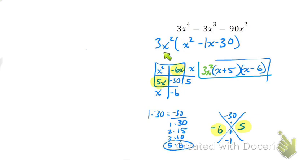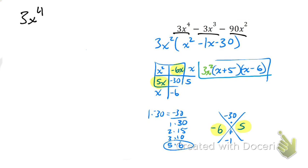So we have to take out the GCF first and then we're going to factor it. All the work is already here but I'm going to walk through it step by step. Ask me questions if you have any. The first thing you do is see if you can make all the numbers smaller, because especially when you have bigger numbers it makes it a lot harder to factor. So I want to look at each of these terms: 3x to the fourth minus 3x to the third minus 90x squared.